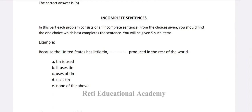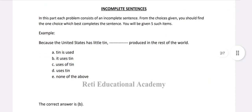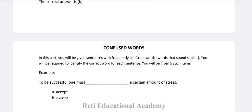Incomplete Sentences: Each problem consists of an incomplete sentence. From the choices given, find the one choice which best completes the sentence. You will be given 5 such items. Example: 'Because the United States has little tin, dash produced in the rest of the world.' A. Tin is used, B. It uses tin, C. Uses of tin, D. Uses tin, E. None of the above. The right option is B: 'It uses tin' — Because the United States has little tin, it uses tin produced in the rest of the world.